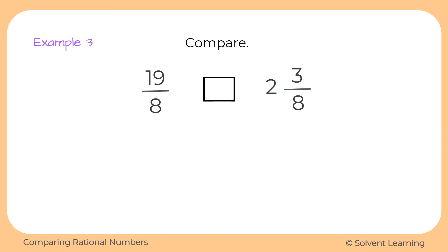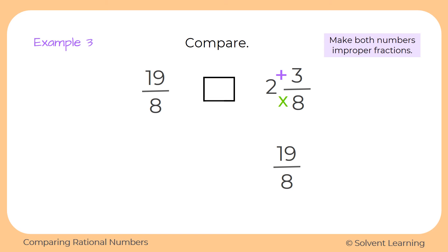Now let's compare the same two numbers as improper fractions. We convert the mixed fraction two and three-eighths: multiply the whole number by the denominator — two times eight is sixteen — then add the numerator three, giving nineteen. So two and three-eighths becomes nineteen over eight. Now we have nineteen-eighths compared to nineteen-eighths, and they're equal. Whether we use mixed fractions or improper fractions, we get the same result.